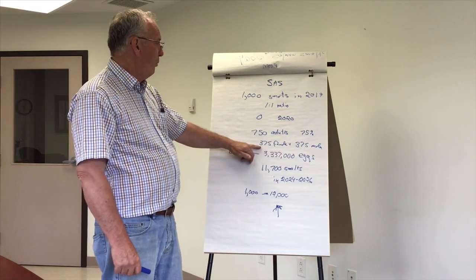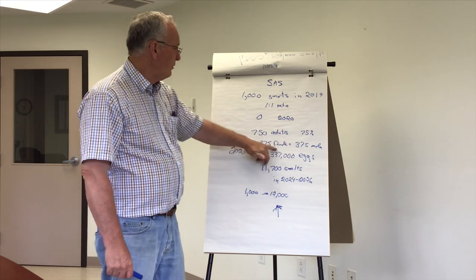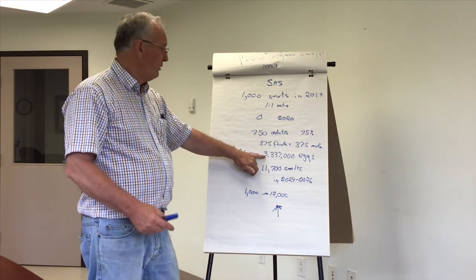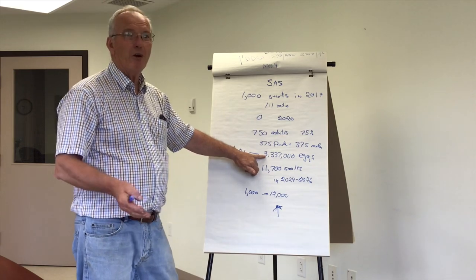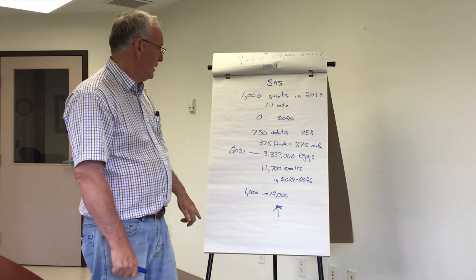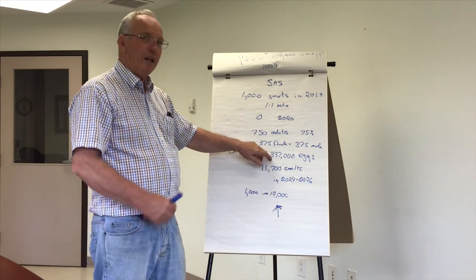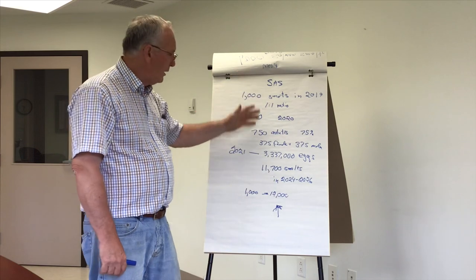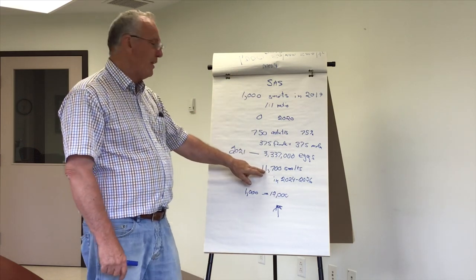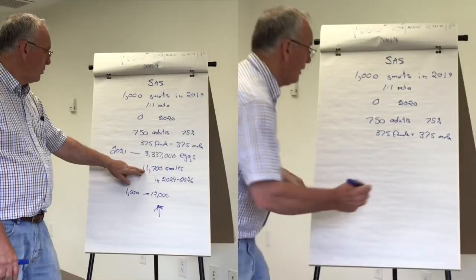So what would this produce? 375 females would produce 337,000 eggs compared to 39,000 eggs from the wild. And given natural survival in the wild, what would that produce? That would produce 11,700 smolts.